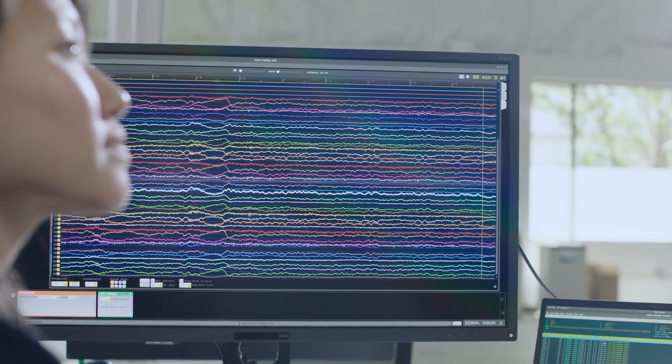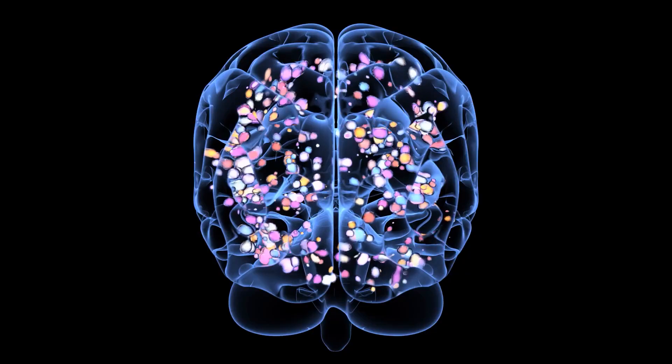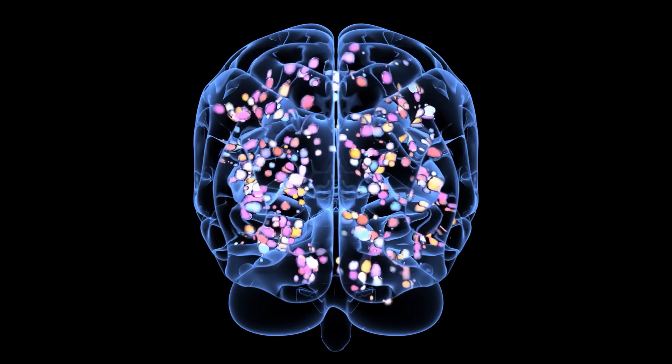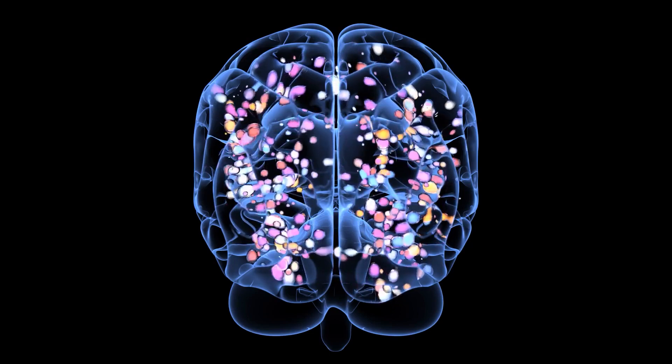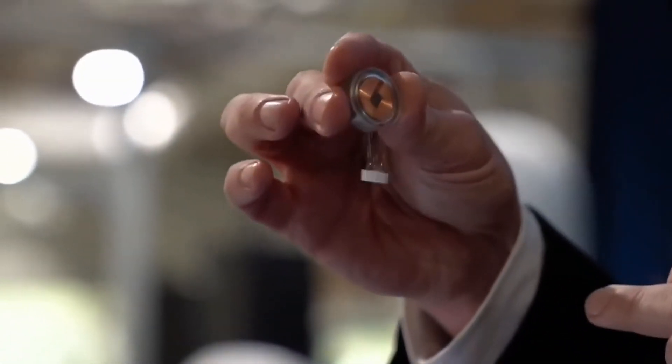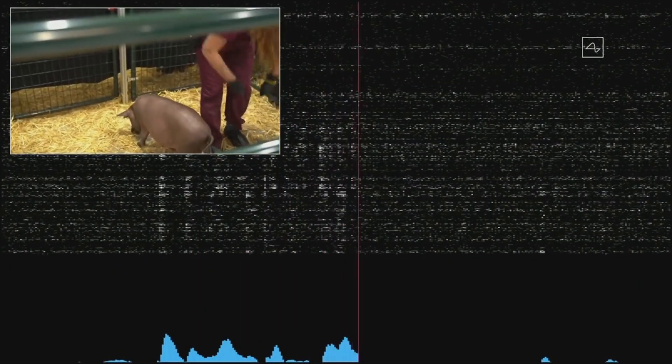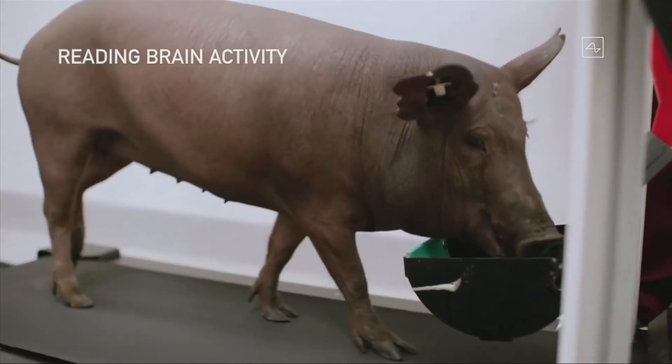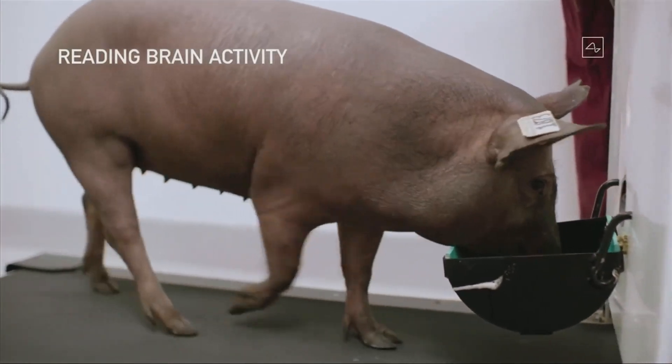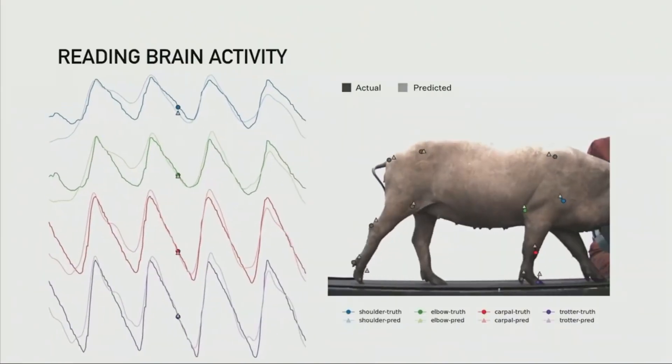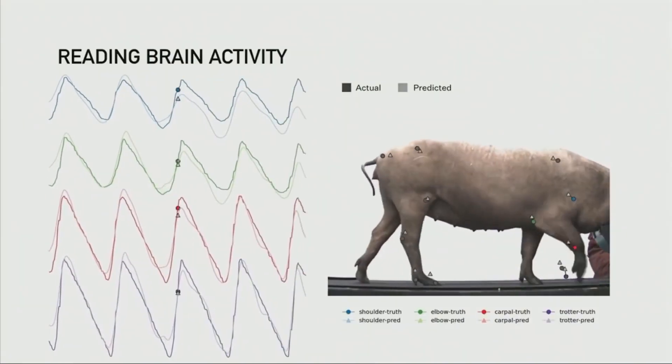What progress has Neuralink made, and what are its latest updates? Let's find out. In August 2020, the company held a highly publicized event to demonstrate its progress, where it showed off a pig named Gertrude implanted with one of its devices, which allowed her to control a video game using her snout. The demonstration was meant to showcase the company's implant capabilities, which can record and transmit brain activity.